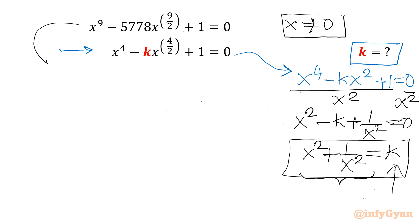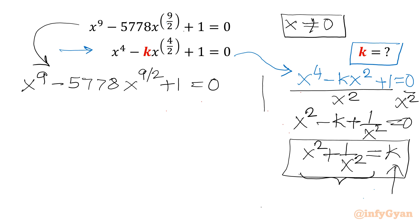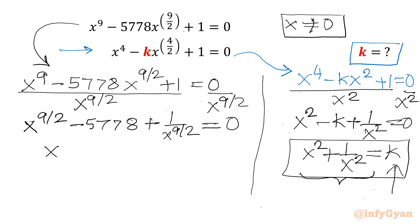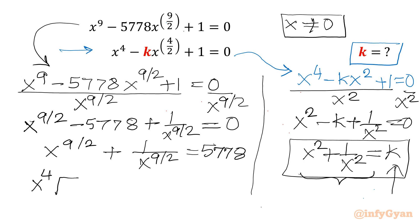Now turning to the first equation: x^9 minus 5778·x^(9/2) plus 1 equal to 0. Dividing both sides by x^(9/2) and splitting the numerator, we get x^(9/2) minus 5778 plus 1/x^(9/2) equal to 0. Since 9/2 is 4 and a half, we can write x^(9/2) as x^4·√x, giving x^4√x + 1/(x^4√x) equal to 5778.